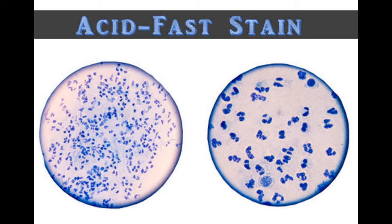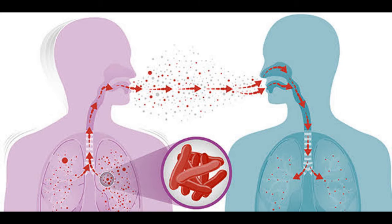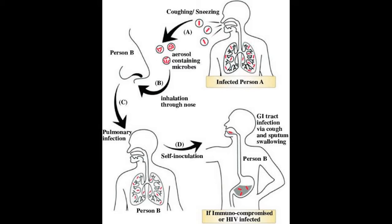First let me tell you about the modes of transmission. There are four modes: inhalation, ingestion, inoculation, and transplacental route. In the inhalation route, organisms present in droplets can be inhaled to cause infection. In ingestion, the sputum from the lungs can be self-swallowed to cause tonsillar or intestinal tuberculosis.